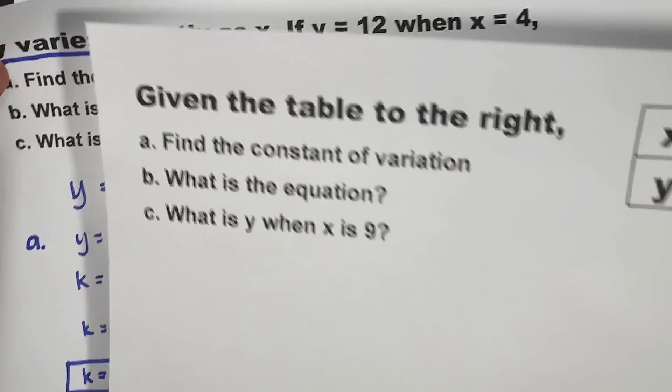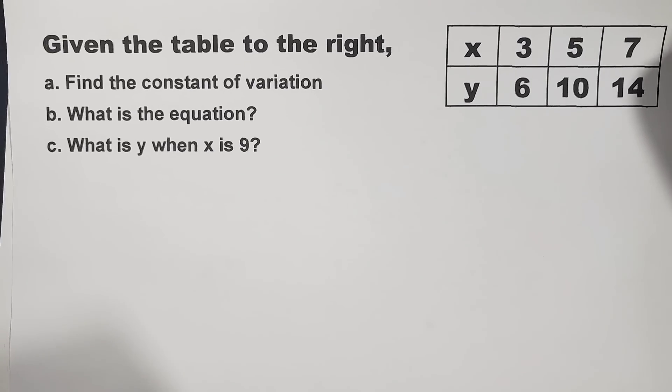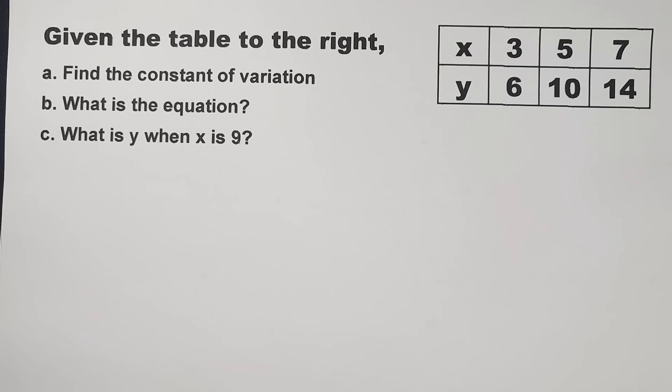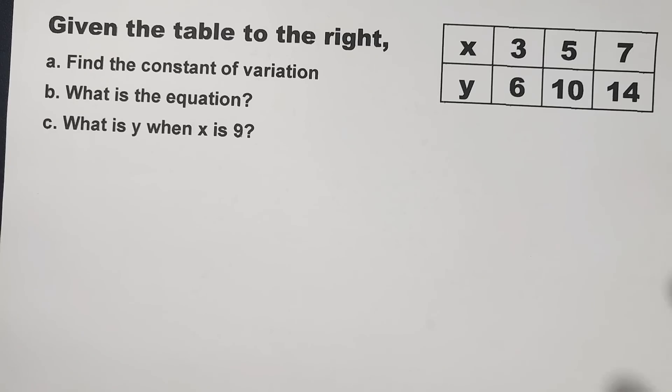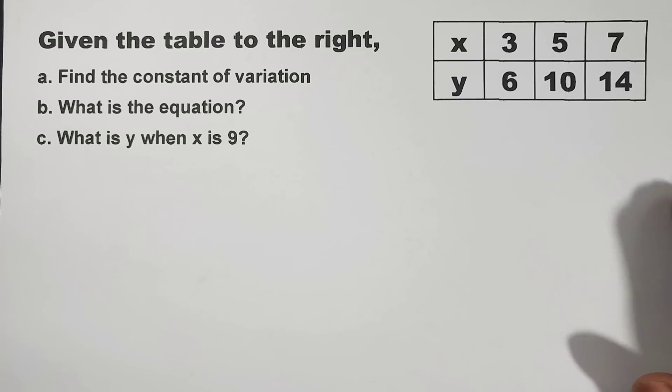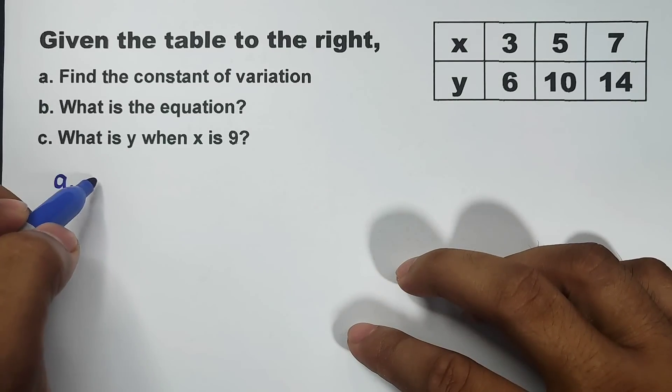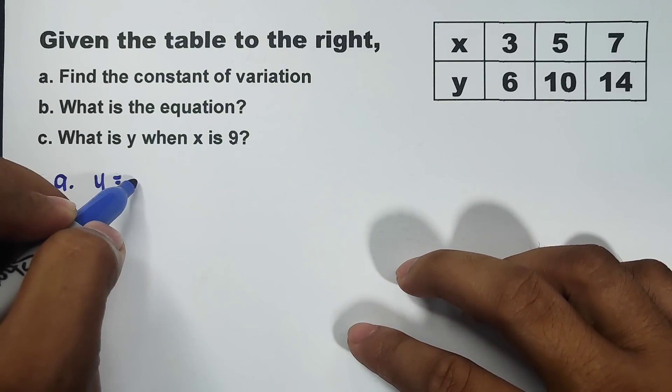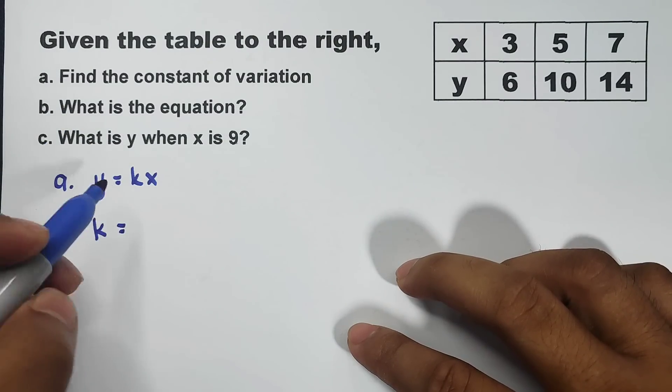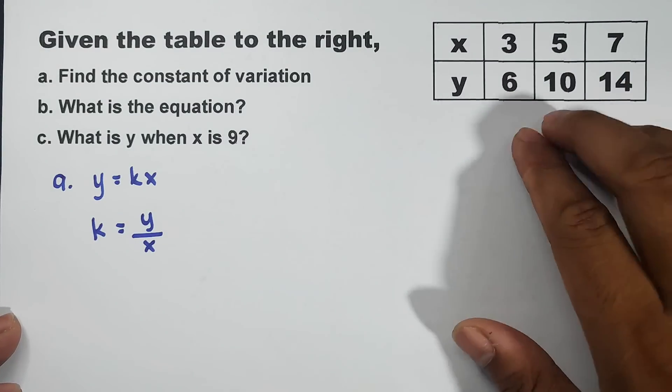For the second example, what we have here is a given table of values. Table of values. Same question. We will try to find the constant of variation. So, constant of variation. It's easy to find the constant of variation. The formula is y equals kx, and for the formula of constant of variation, that is k equals y over x. Gagawin mo lang, these are our values.